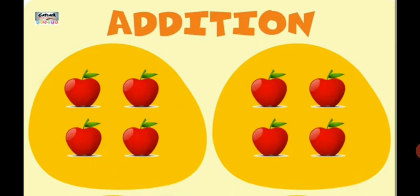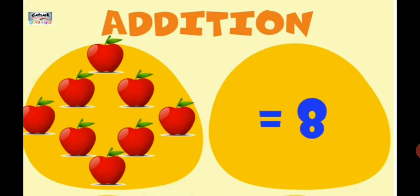Now let's take one more example of apples. In the left side, the number of apples are 1, 2, 3, 4. On another side, you also have same number of apples, 1, 2, 3, 4. So now let's count them all together. 1, 2, 3, 4, 5, 6, 7, 8. So total number of apples on the screen equals 8.